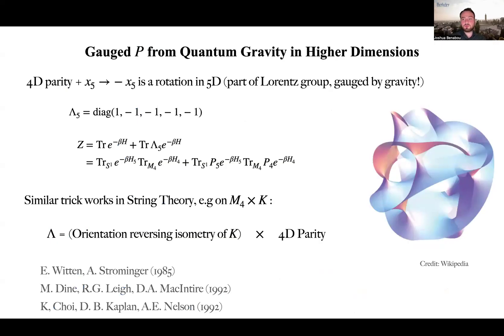In string theory, it is well established that four-dimensional P or CP symmetry can arise as a discrete gauge symmetry. This is perhaps unsurprising since it is expected in any theory of quantum gravity that global symmetries are violated.